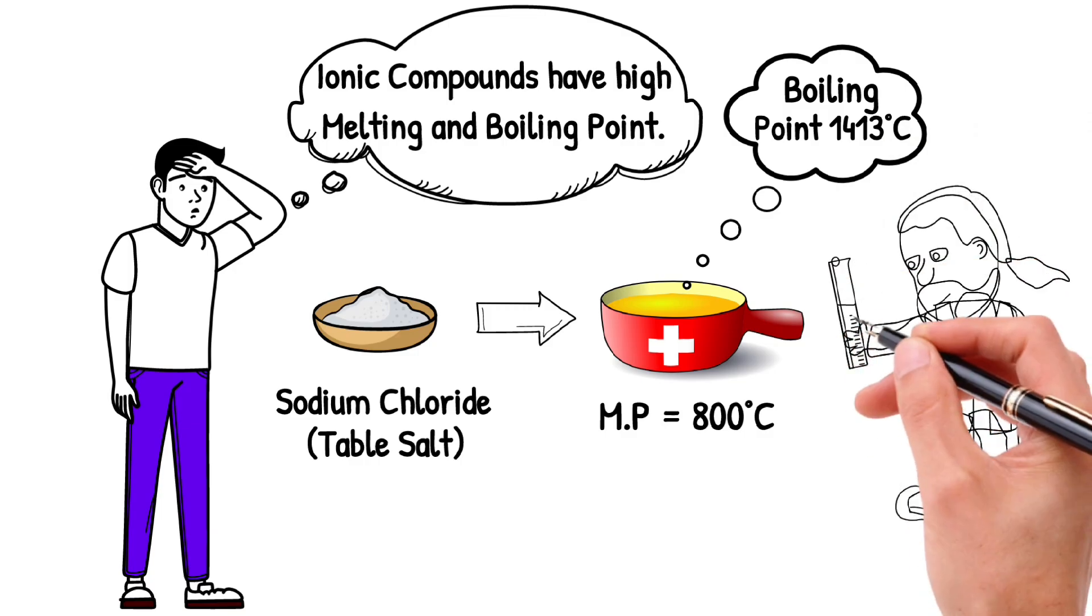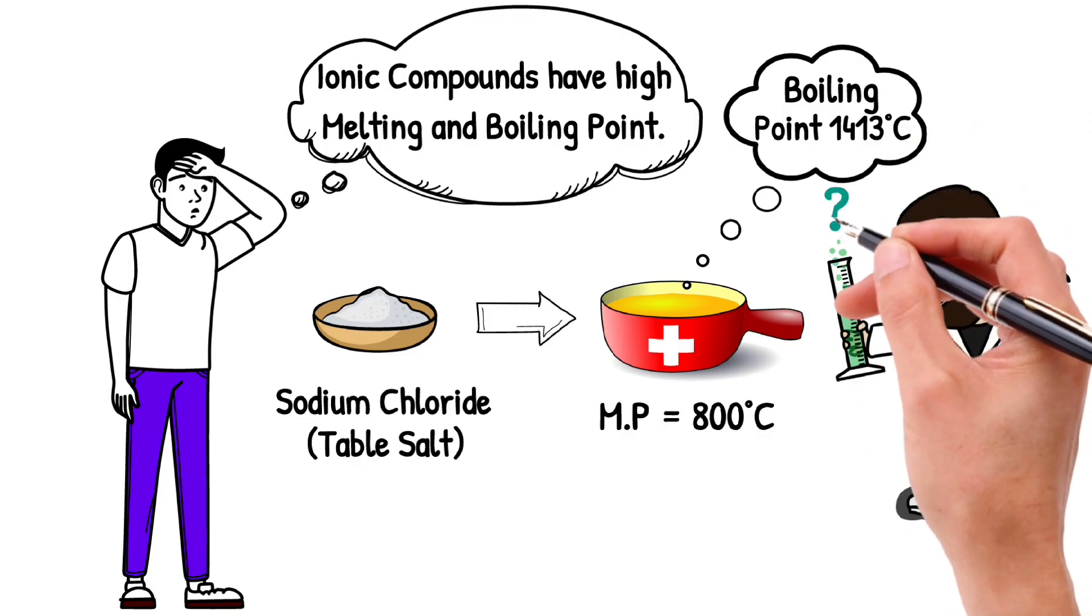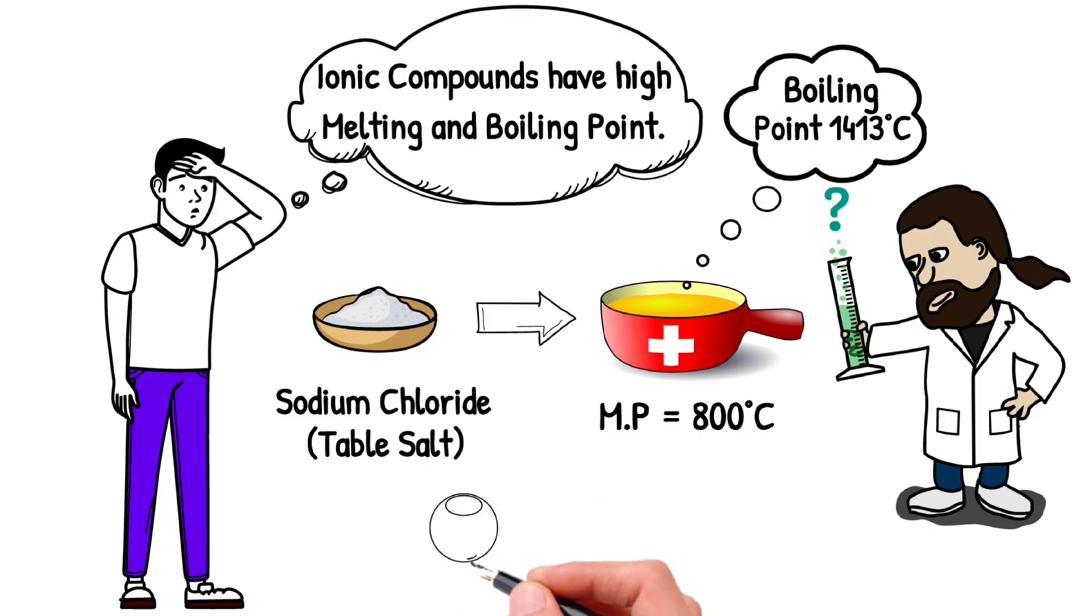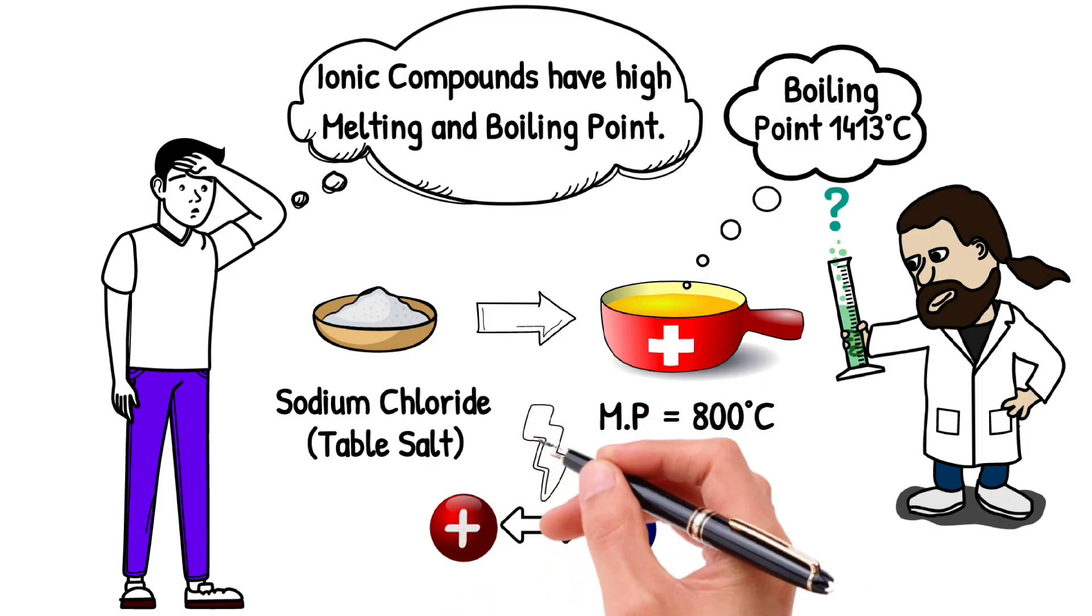So why do these compounds have such high melting and boiling points? Well, it's because of those strong electrostatic forces of attraction between the oppositely charged ions. These forces are so strong that a great amount of energy is required to break these forces.